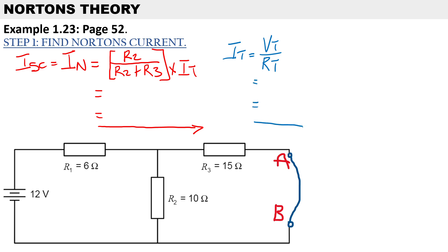To calculate R_total, after short-circuiting the load resistor, you can see that R2 and R3 are in parallel, and R1 is in series. So R_total equals R1 in series plus the parallel branch of R2 and R3.